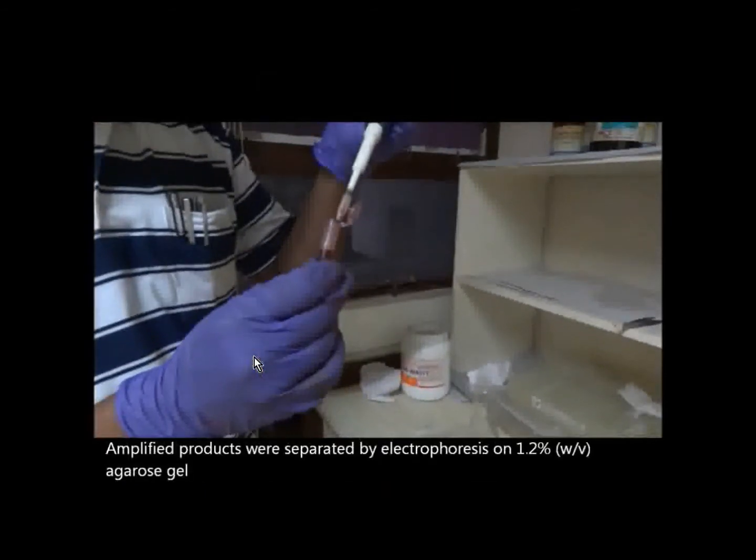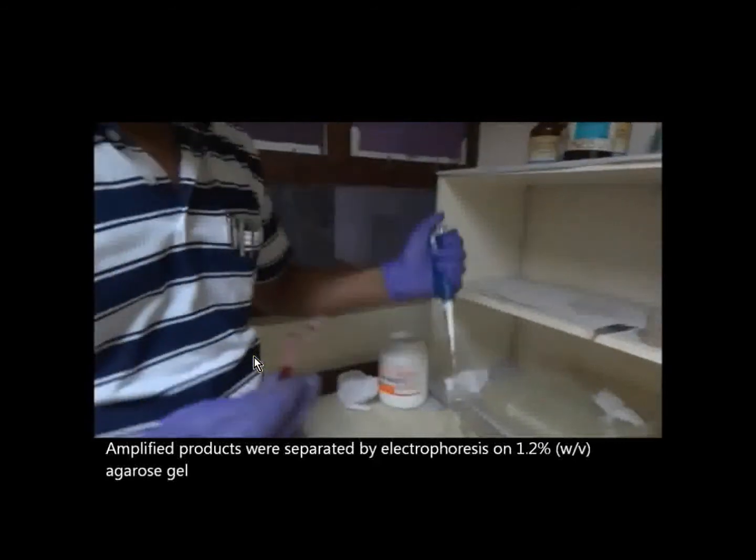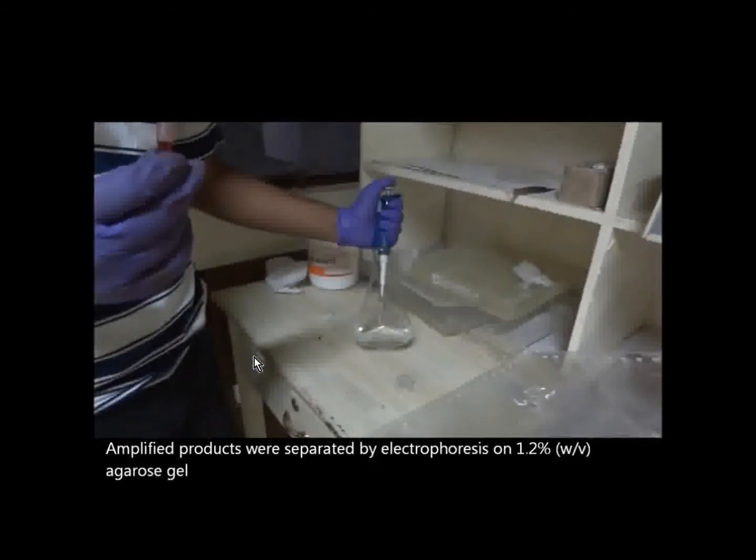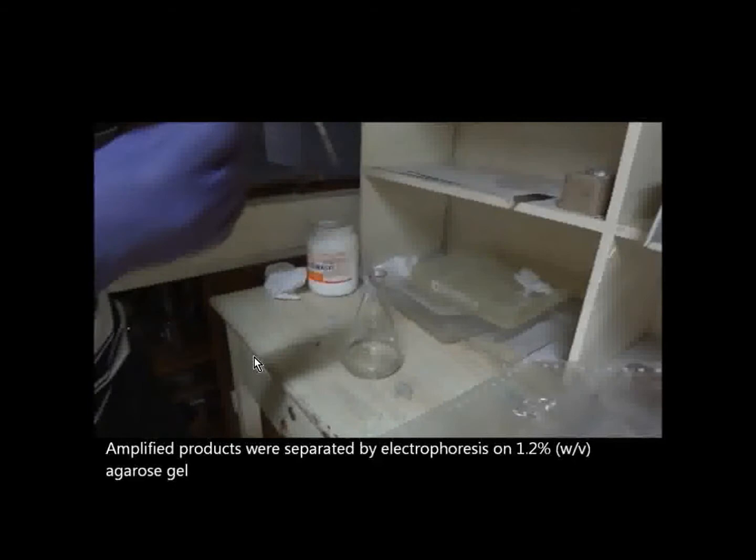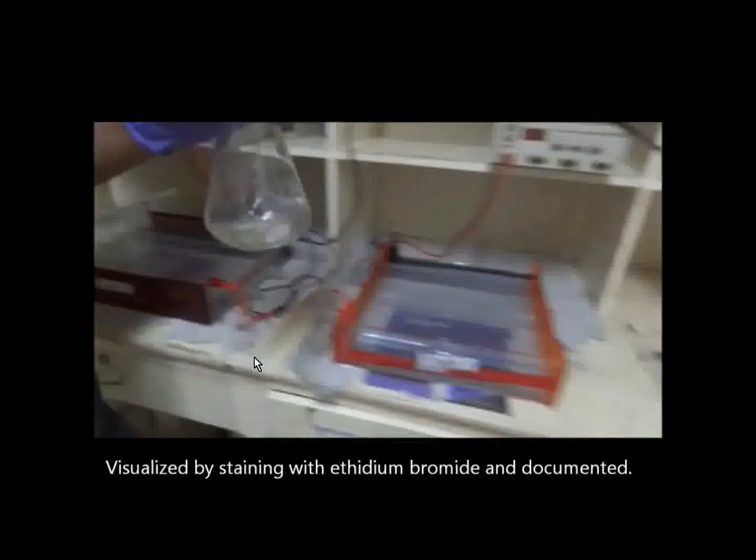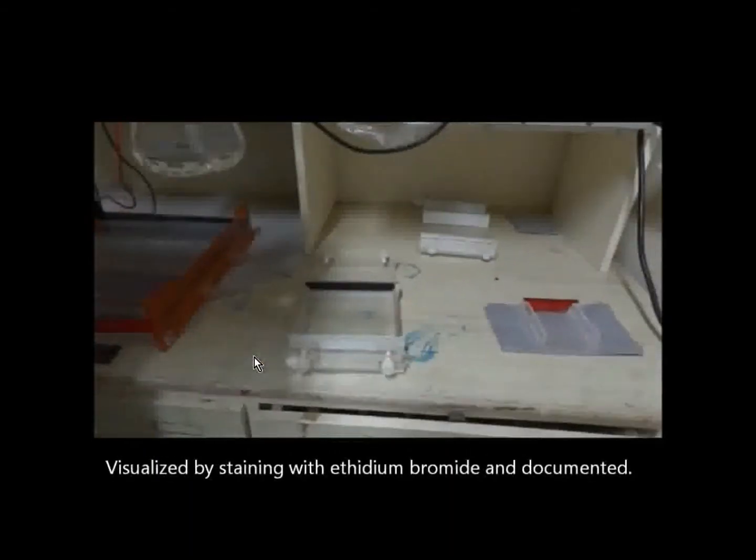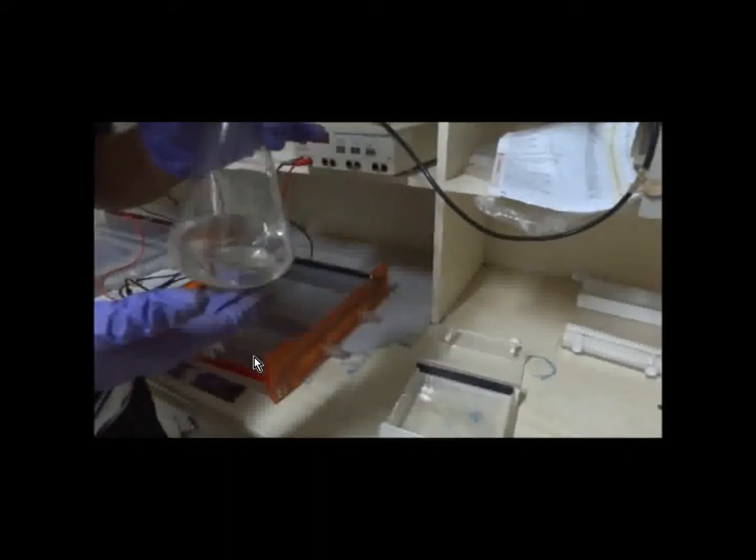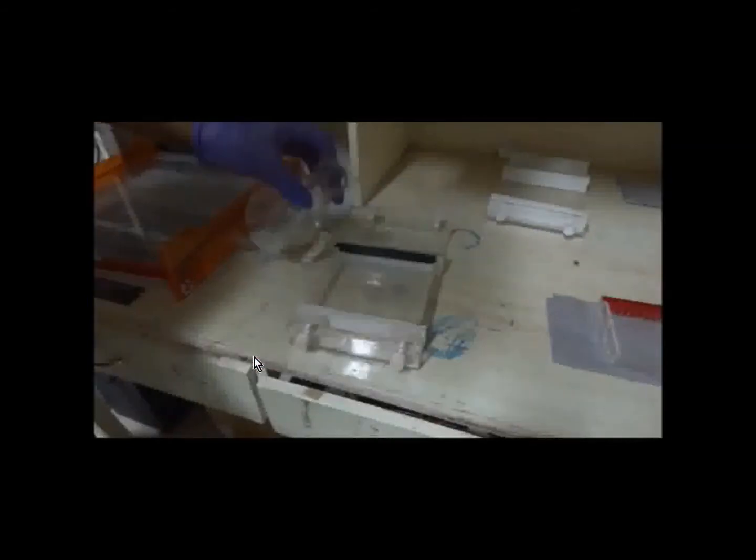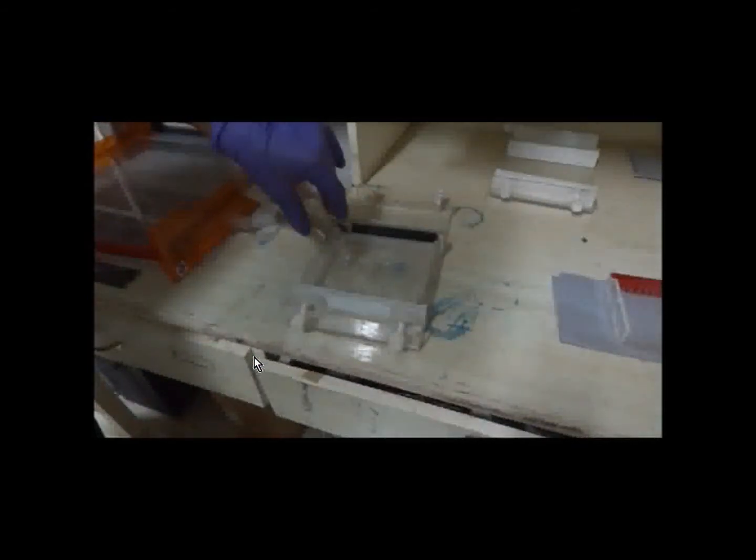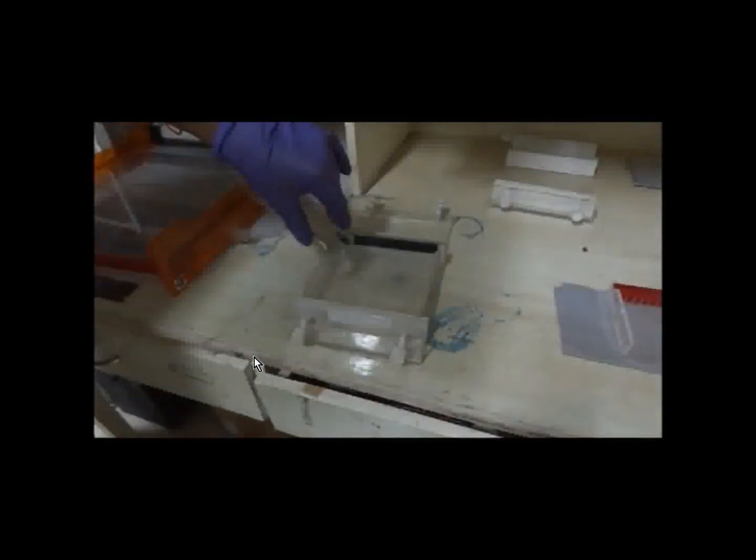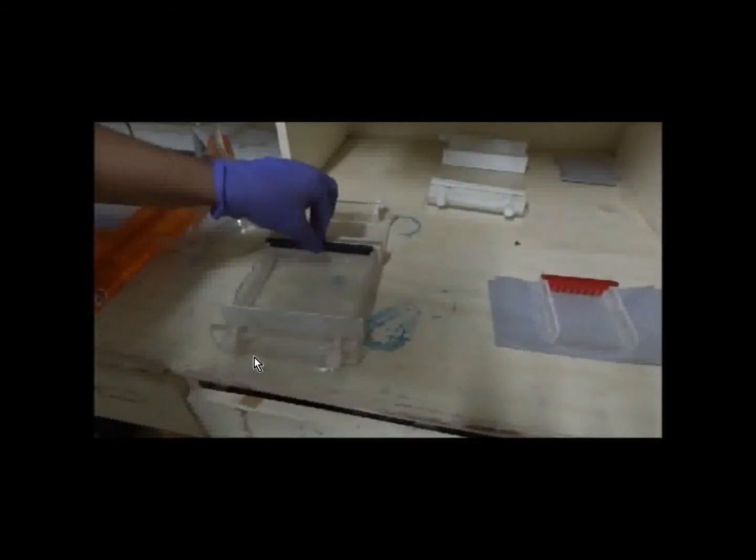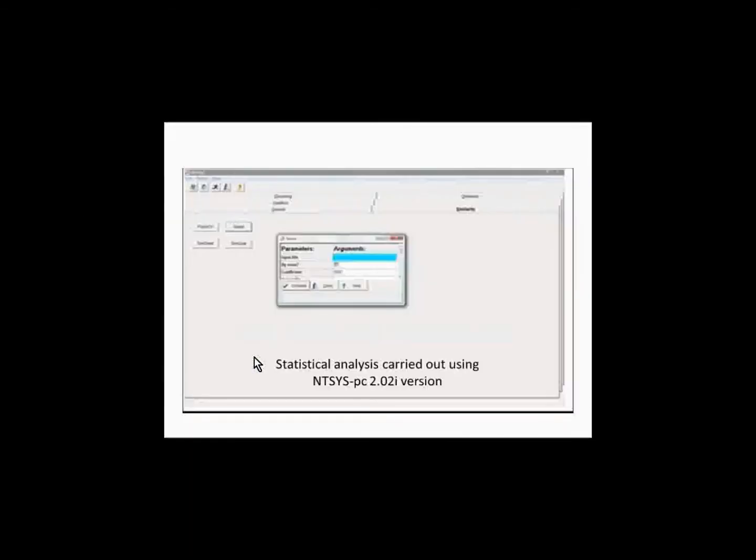The amplified products were separated by electrophoresis on 1.2% agarose gel, visualized by staining with ethidium bromide and then documented. The statistical analysis was finally carried out using NTSYS version.